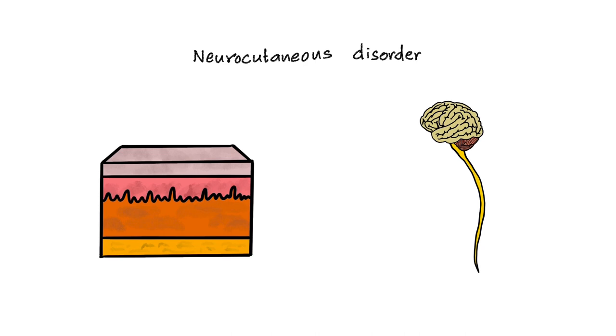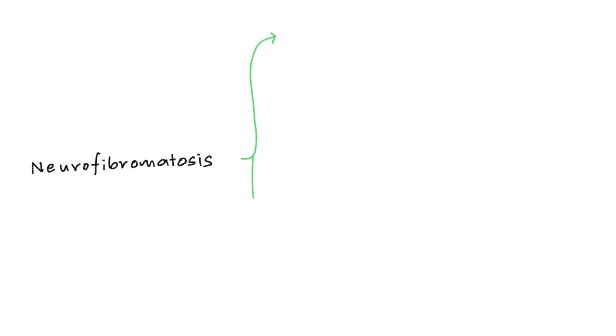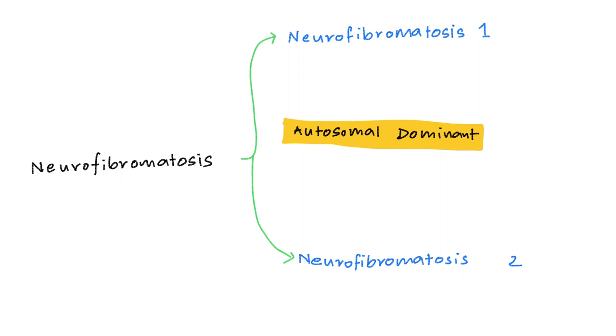Neurofibromatosis is divided into two types: neurofibromatosis type 1 and neurofibromatosis type 2. There are a few things common between them. Both are autosomal dominant diseases and both occur due to loss of function mutations.